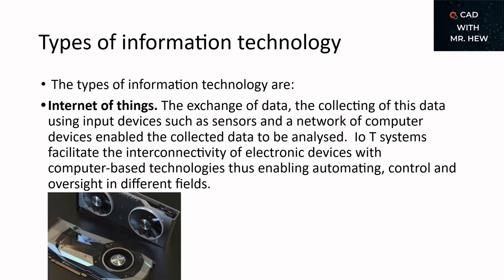The internet of things involves the exchange and collection of data using input devices such as sensors, and a network of computer devices that enable the collected data to be analyzed. Internet of things systems facilitate the interconnectivity of electronic devices with computer-based technologies, thus enabling automation, control, and oversight in different fields.